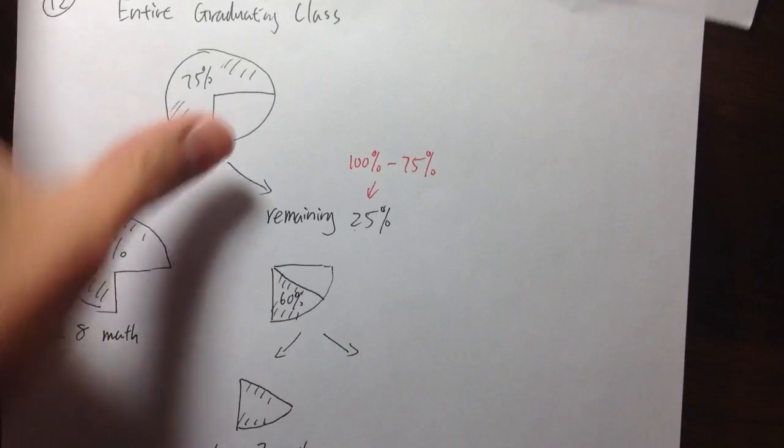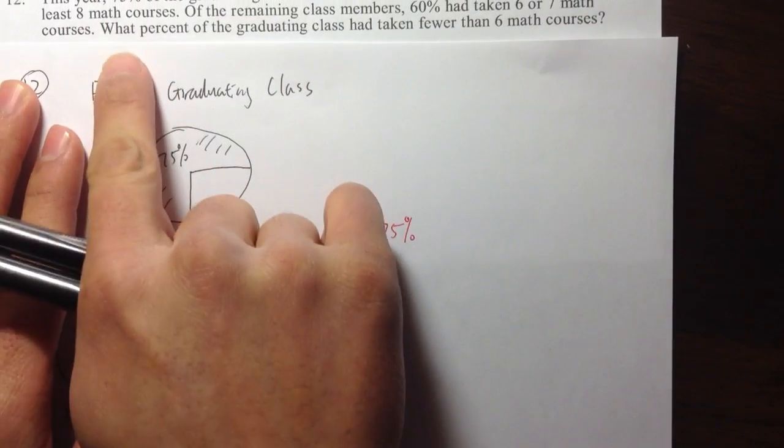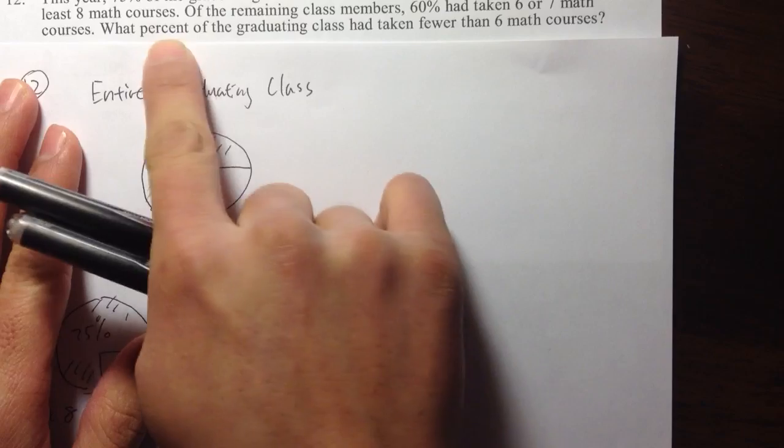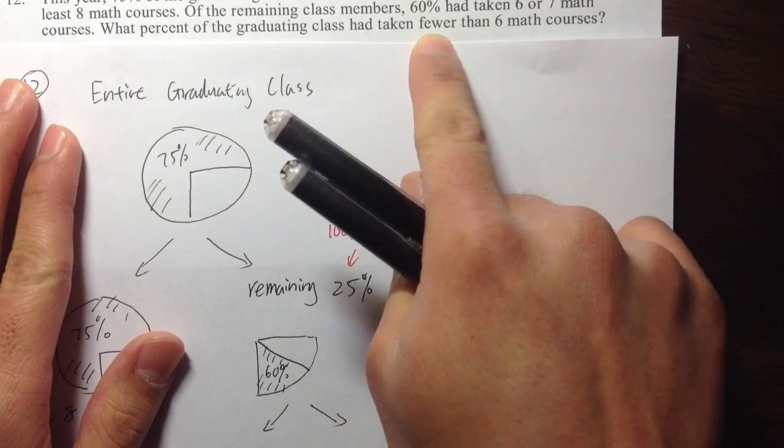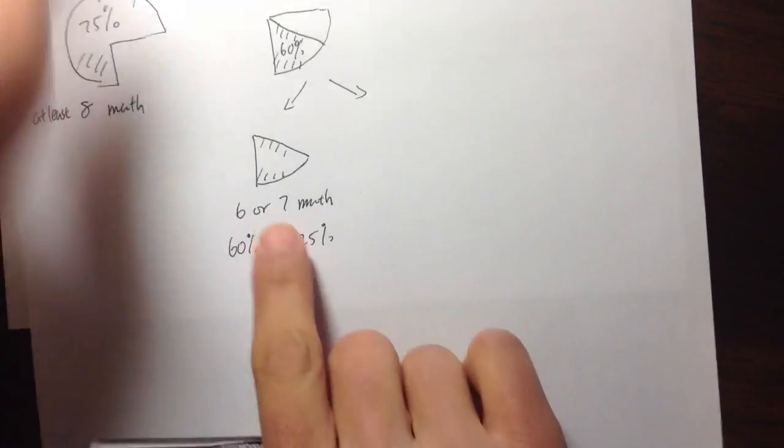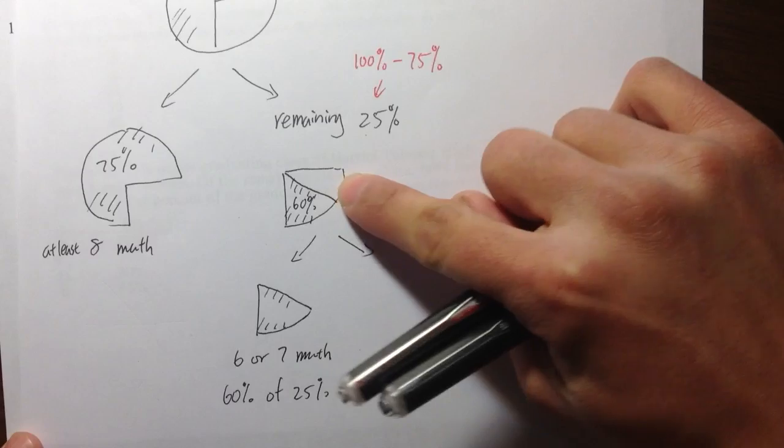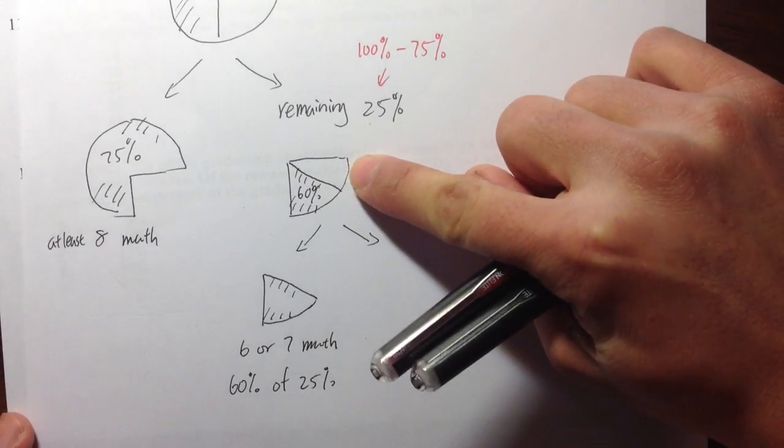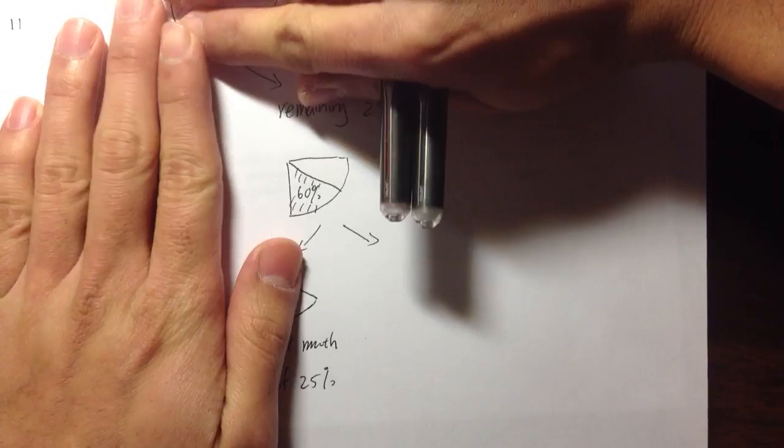Let's read the question one more time. It asks us, what percent of the graduating class had taken fewer than six math courses? So I got six or seven, I got more than eight. And actually, this part, it's less than six. This part is less than six.